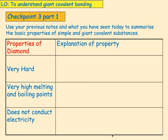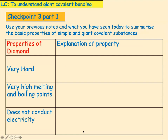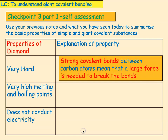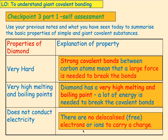Checkpoint three, part one — we're going to look at the properties of diamond. Sketch another table, pause the video and come back when you've done it. The reason why diamond is very hard is because it has strong covalent bonds between the carbon atoms, and a large force is needed to break all the bonds. It has a very high melting and boiling point because a lot of energy is needed to break those strong covalent bonds. It does not conduct electricity because there are no delocalised electrons and no other charged particles to carry a charge.